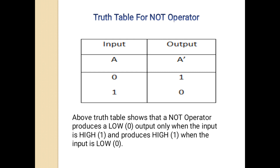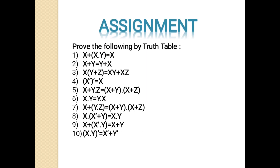This is the truth table for the NOT operator. Since it is a unary operator, it operates on a single variable — here it is A. There are two rows and two columns: one for the input and one for the output. The input has 0 and 1. The NOT operator complements the value, so it produces output 1 when the input is 0, and produces output 0 when the input is 1.